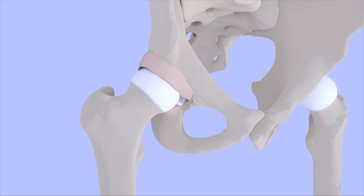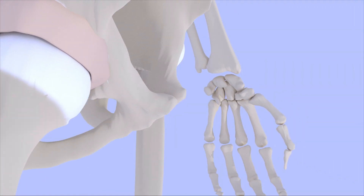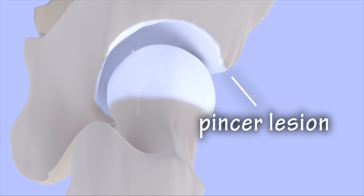Femoral acetabular impingement syndrome, or hip impingement, occurs when excess bone forms at the hip joint. When the extra bone occurs on the head and neck of the femur, it is known as CAM impingement. When the extra bone occurs on the edge of the acetabulum, it is known as pincer impingement. Sometimes both CAM and pincer lesions are present.